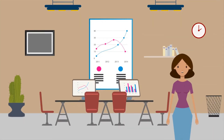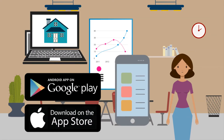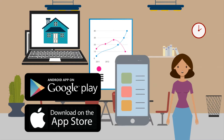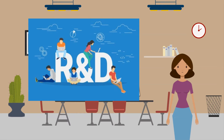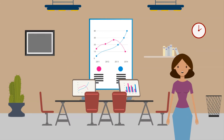The quaternary sector consists of those industries providing information services, such as computing, ICT (information and communication technologies), consultancy (which is offering advice to businesses), as well as R&D, which stands for research and development, particularly in scientific fields. The quaternary sector is sometimes included with the tertiary sector, as they are both service sectors. The tertiary and quaternary sectors make up the largest part of the UK economy, employing 76% of the workforce.